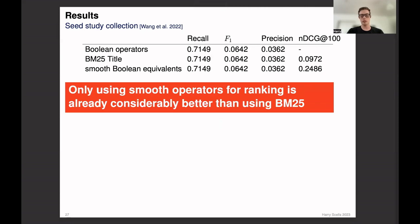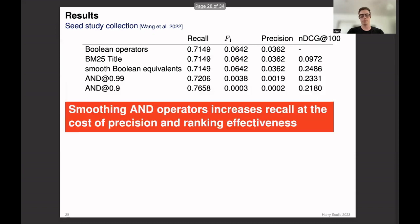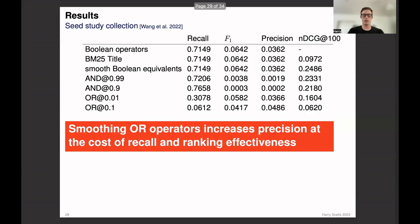So looking at some results, when we only use the smooth operators for ranking, we can see that it's already considerably better than a BM25 baseline. And we can also see that the smooth operator equivalents retrieve the same set of documents as the boolean queries.